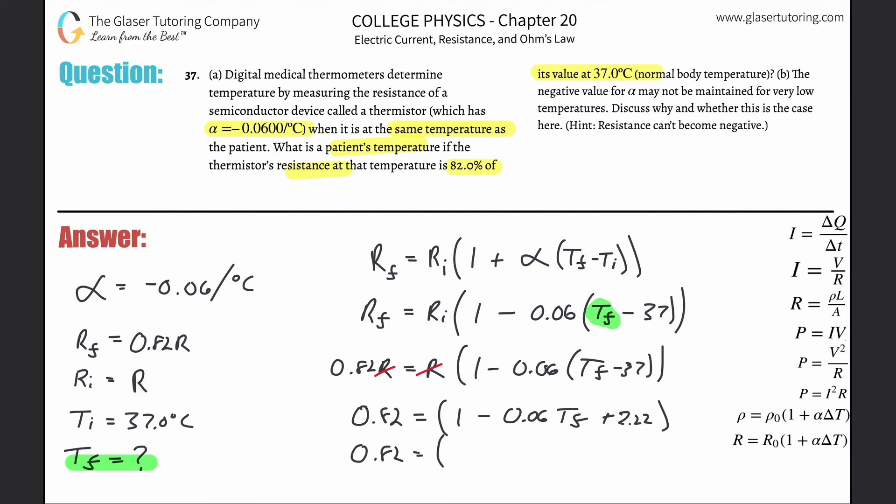Now this becomes 3.22 minus 0.06T_f. I'm just adding those two terms.